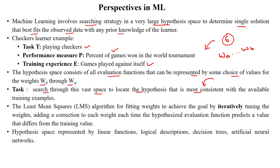If there are any errors, we can reduce them by applying the least mean square error algorithm, which is used to find out the difference between the actual target function and the predicted approximate target function. The weights play a major role in reducing the error by applying various iterations, and throughout the iterations each time the hypothesis will be adjusted based upon weight tuning.